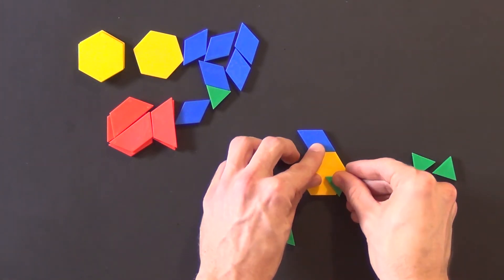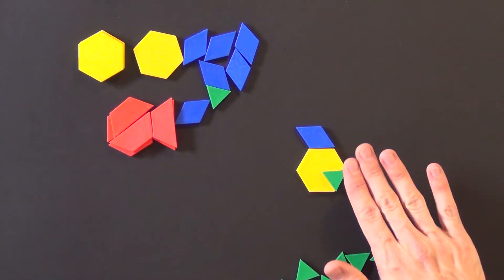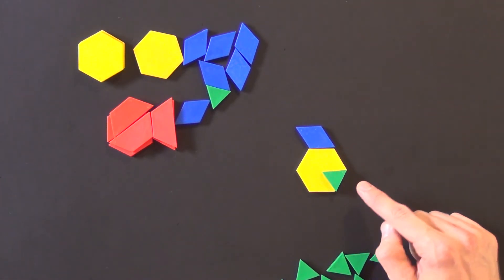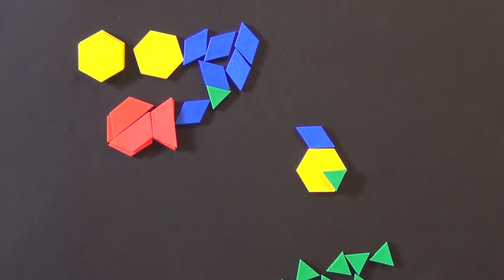Well one green triangle out of the whole represents one-eighth because this piece will repeat eight times and I just have one of them.